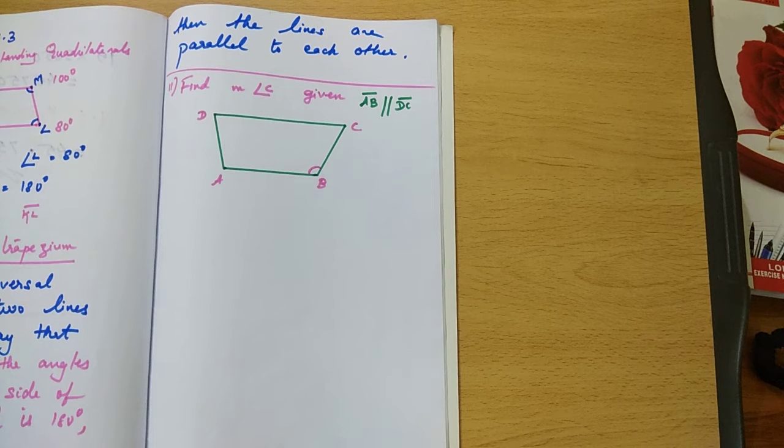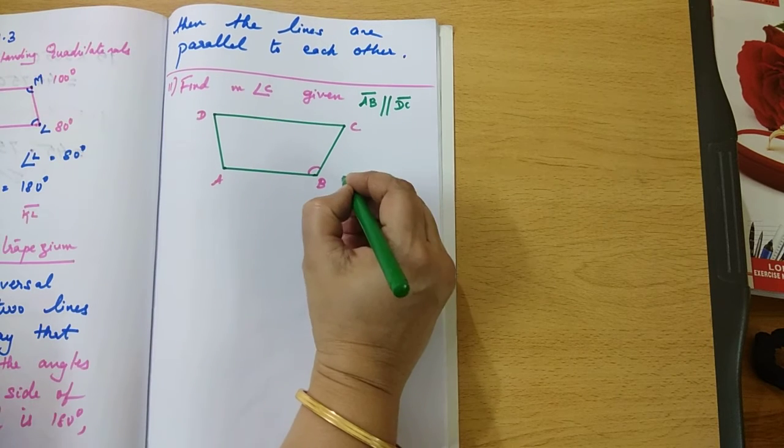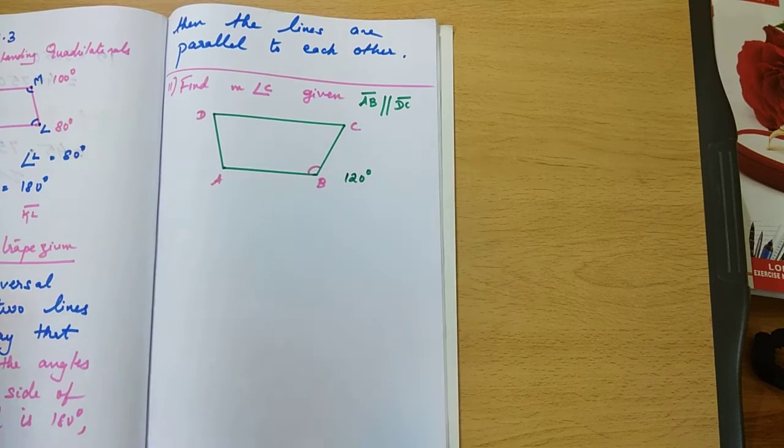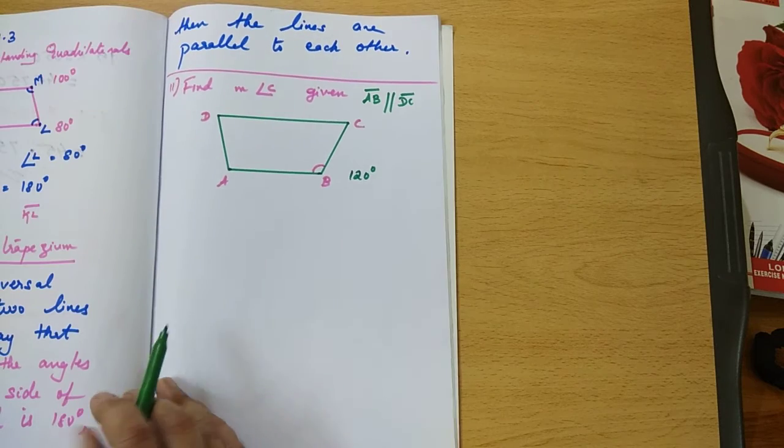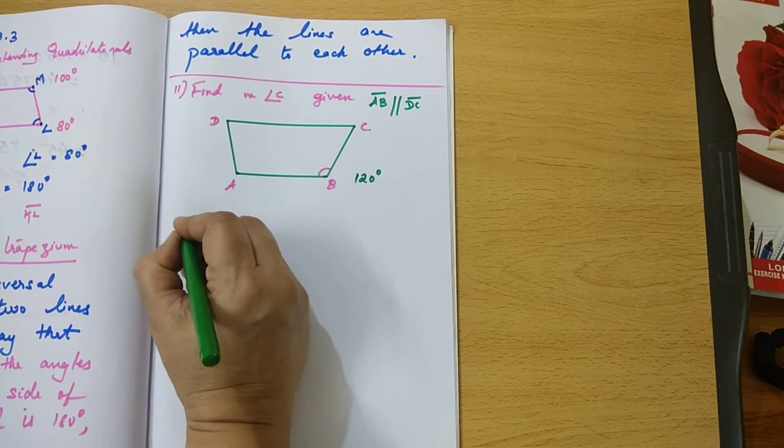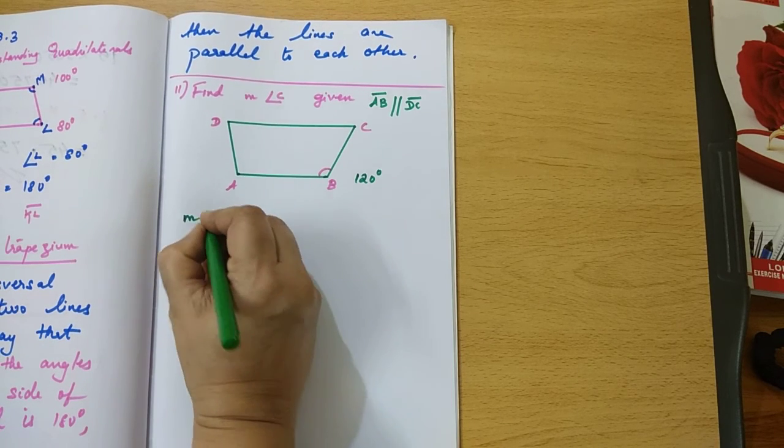And one more thing which is given to you is angle B is equal to 120 degrees. So given that AB is parallel to DC, you know the measure of angle C plus 120 degrees should be equal to 180 degrees.